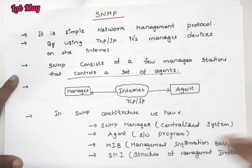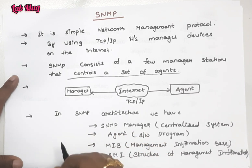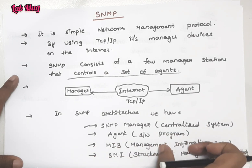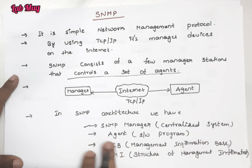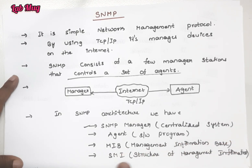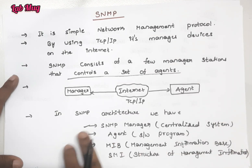Regarding the architecture of SNMP: the architecture consists of three main components - SNMP Manager, which is a centralized system; SNMP Agent, which is a software program; and SNMP MIB, that is Management Information Base; and SMI, Structure of Management Information. These are the different architectures in SNMP.